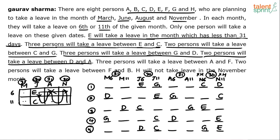Two persons will take a leave between D and A: D dash dash A. In case 2, A and E are overlapping — not possible — so case 2 is eliminated. In case 3, D dash dash A cannot go on that side, so A comes here. Similarly in the last case, D dash dash A comes here.